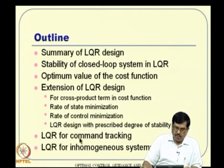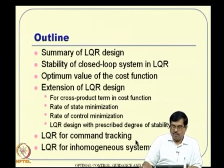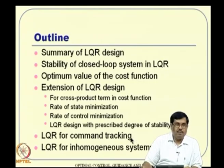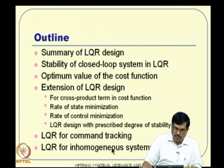We will also follow up with formulations for command tracking, as well as for inhomogeneous systems — meaning if you have X-dot equal to AX plus BU plus C, that is called an inhomogeneous system, because when X and U are zero, X-dot is still C. We will see all these extensions in this class.